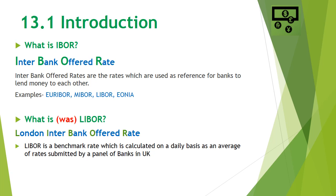Starting with the introduction into what are interbank offered rates or IBORs. Basically, an interbank offered rate is a rate used as a reference by banks when they lend money to each other. Different markets and currencies have different reference rates or IBORs. For example, for Euro there is Euribor, in India there is MIBOR which is Mumbai Interbank Offered Rate, in UK and US there is the London Interbank Offered Rate, there is EONIA which is EUR Overnight Index Average, and many other similar reference rates. Our focus is on LIBOR, which is the London Interbank Offered Rate, and we will explain why it is transitioning into new rates.